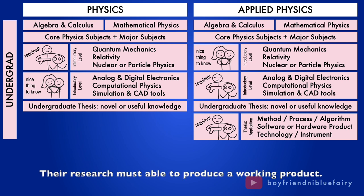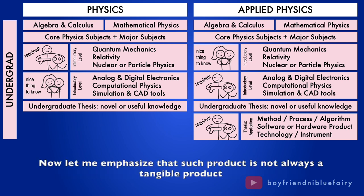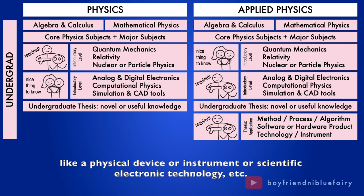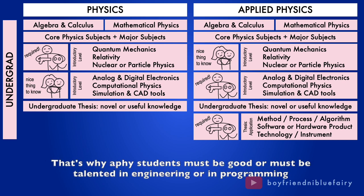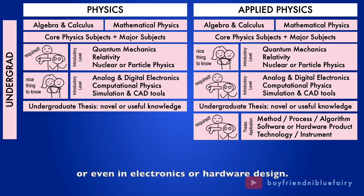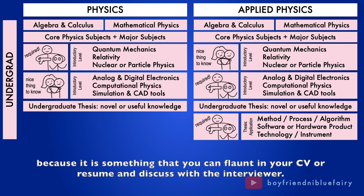When it comes to the application of undergraduate thesis or research, this is where the pressure comes in to AFI students. Their research must be able to produce a working product. Now, let me emphasize that such product is not always a tangible product like a physical device or instrument or scientific electronic technology, etc. This product can also be in the form of software or a process or an algorithm or even a method. That's why AFI students must be good or must be talented in engineering or in programming or even in electronics or hardware design. But these hardships actually pay off during job interviews because it is something that you can flaunt in your CV or resume and discuss with the interviewer.